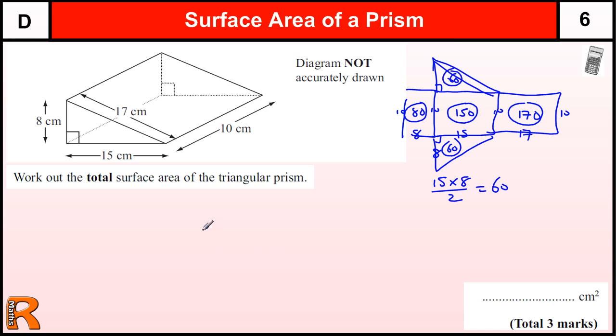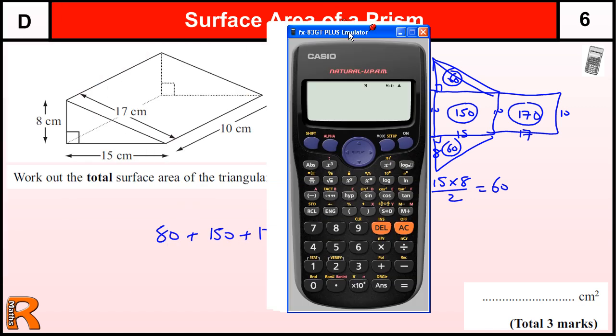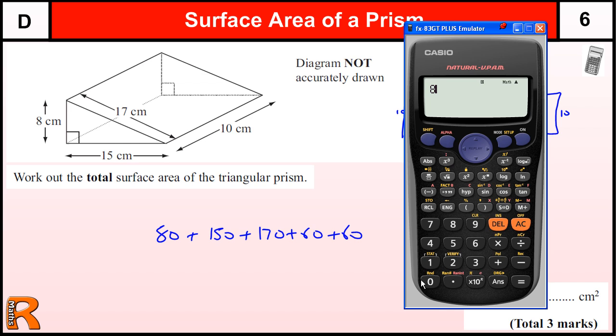So this triangle is the same, 60. Then we just need to add those up: 80 plus 150 plus 170 plus 60 plus 60. And as it's a calculator paper, might as well use the calculator. So let's bring it in: 80 plus 150 plus 170 plus 60 plus 60.